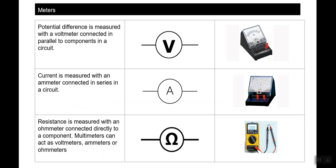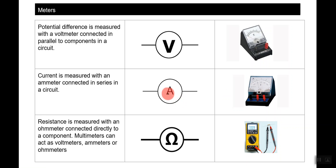Current — like the flow of electricity — is measured with an ammeter connected in series to the circuit. This is what an ammeter looks like, and this is the symbol that represents an ammeter.